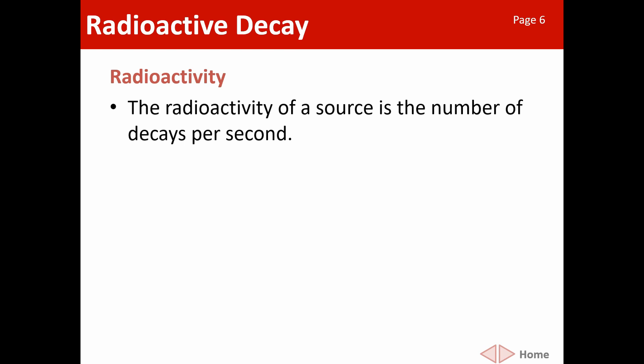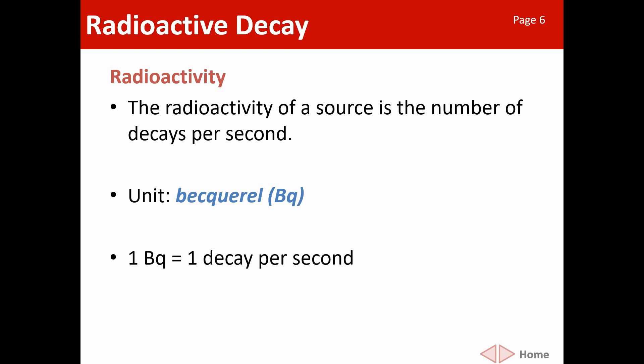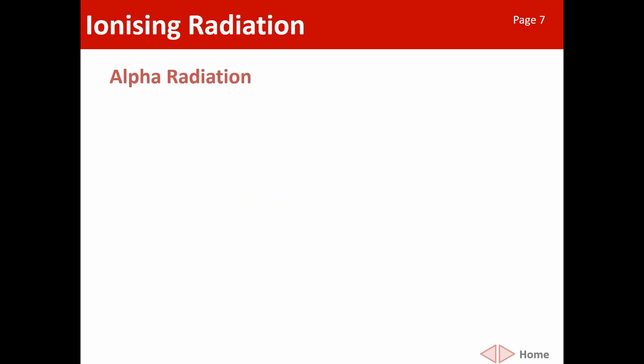We can measure radioactivity using something called a Geiger-Müller tube. It detects how many decays or how many bits of ionizing radiation come into it. If we count the number of decays per second, that is the radioactivity of a source. The unit is the Becquerel — so if something had a radioactivity of 3 Becquerel, it would mean 3 decays per second; 1000 Becquerel means 1000 decays per second.